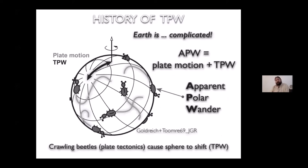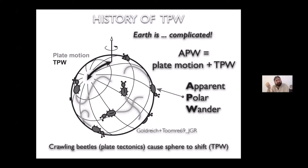By the end of the plate tectonic revolution, smart geophysicists pointed out that the operation of plate tectonics moves masses in the mantle — here depicted as crawling beetles. As these masses move around the sphere, it's almost inevitable that the whole sphere shifts. Paleomagnetism measures apparent polar wander, which is the combination of a plate's movement plus the true polar wander. We measure both the crawling beetle and all the beetles shifting together.